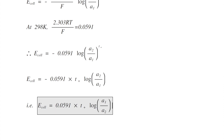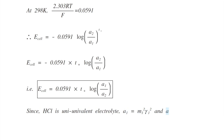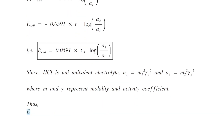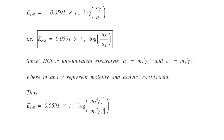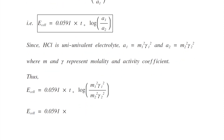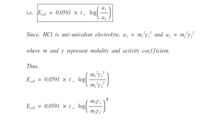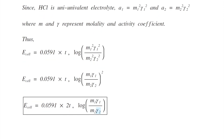This is the final expression for the EMF of an electrolyte concentration cell with transference reversible to anions. Since HCl is a uni-univalent electrolyte, A1 = M1²γ1² and A2 = M2²γ2², where M and γ represent molality and activity coefficient. Thus, E_cell = 0.0591 × T+ × log(M1²γ1² / M2²γ2²), or E_cell = 0.0591 × T+ × log(M1γ1/M2γ2)², and taking the power out: E_cell = 0.0591 × 2T+ × log(M1γ1/M2γ2).